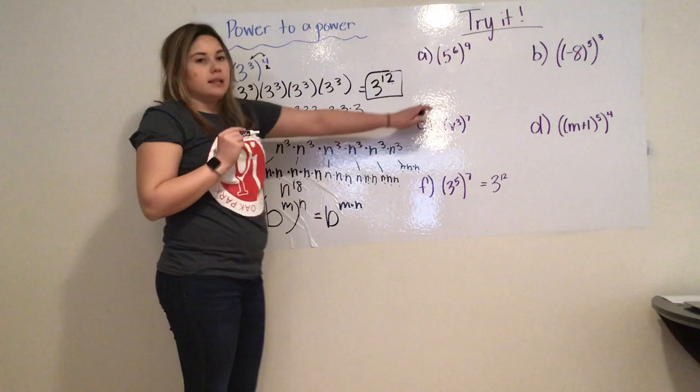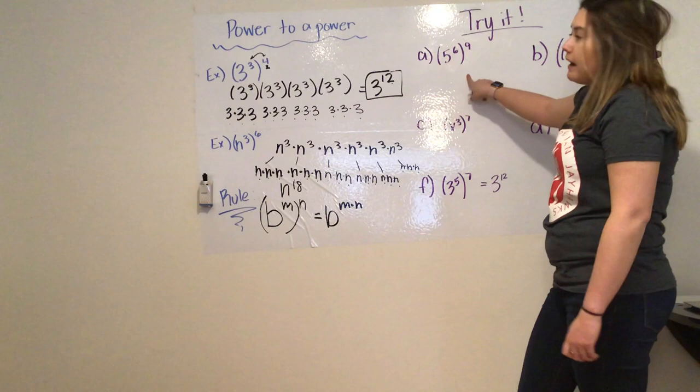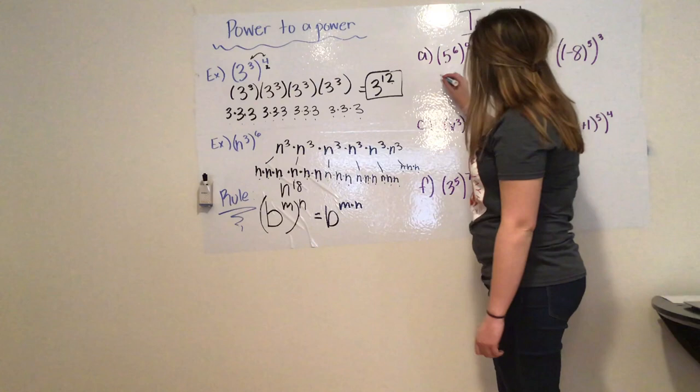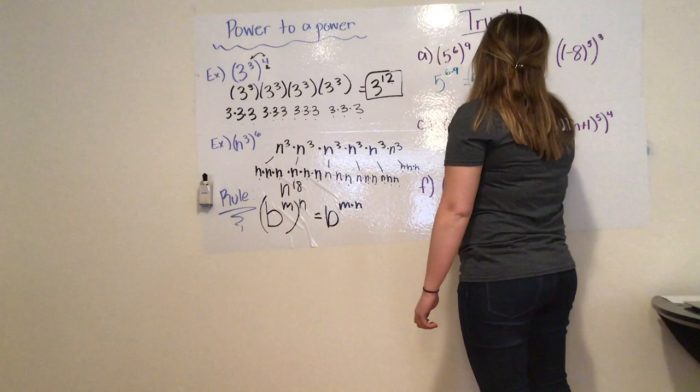All right, so now the triad, we're going to practice. So if I have 5 to the 6, all raised to the power of 9, I'm not going to write out 5 to the 6 nine times and then expand it further. Now I'm just going to use my rule. So, if we think about it, if it's all one base, 5 to the power of 6, and that's getting multiplied nine times, this becomes 5 to the 54th.